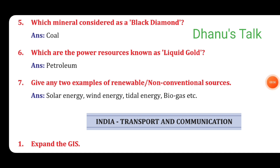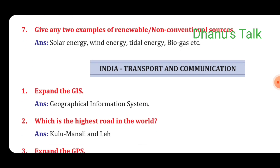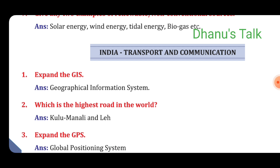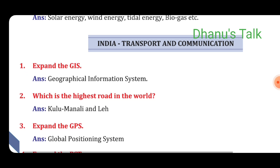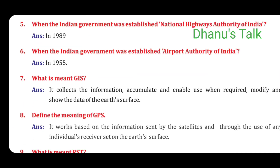From the next chapter: India Transport and Communication. First: Expand GIS. Answer: Geographical Information System. Second: Which is the highest road in the world? Answer: Kulu-Manali-Leh. Third: Expand GPS. Answer: Global Positioning System. Fourth: Expand RST. Answer: Remote Sensing Technology. Question No. 5: When did the Indian Government establish the National Highway Authority of India? Answer: In 1989.